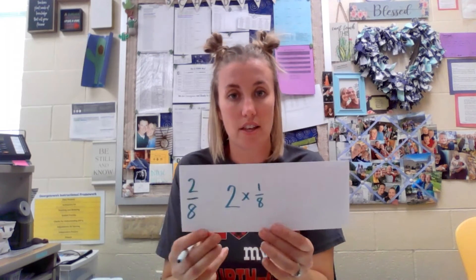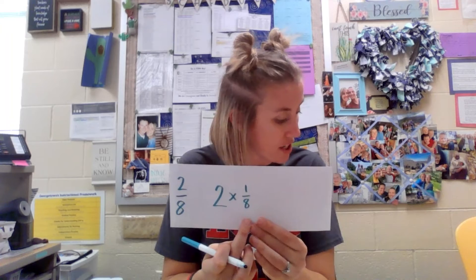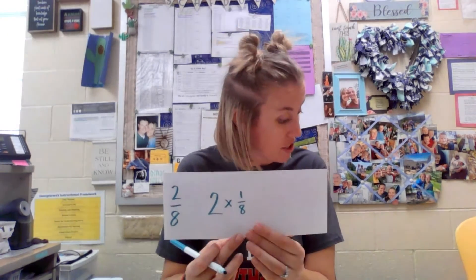Step two: write the fraction you received as a product of a whole number and a unit fraction. This is just writing an expression using a unit fraction to represent this fraction. So we have two groups of one eighth — and it would then look like this. This is the expression that represents this fraction.